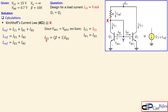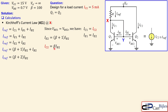We know that the emitter current is always (β+1) times the base current — that is because β times IB plus IB gives that expression. When we use this in our KCL equation, we have IRF expressed in terms of beta and IB2 only. Combining these together, we get IRF equals (β+2) times IB2. For the collector current IC2, we can write IC2 equals β times IB2, or IB2 equals IC2 over beta. Substituting this, we see that IRF is related to IC2 through beta.